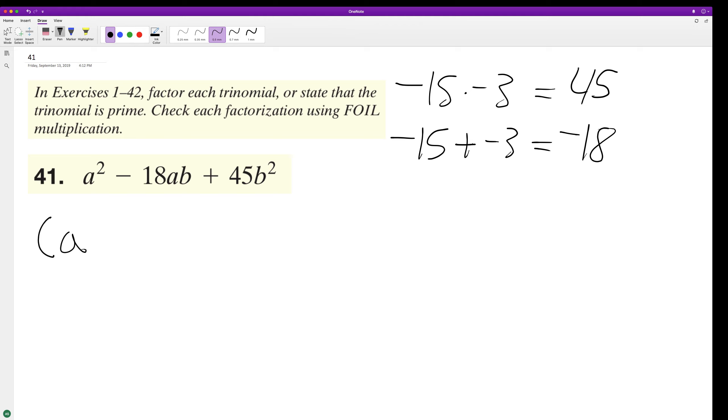So a minus 15b and a minus 3b. Multiply together, we end up with a squared minus 3ab minus 15ab plus 45b squared.